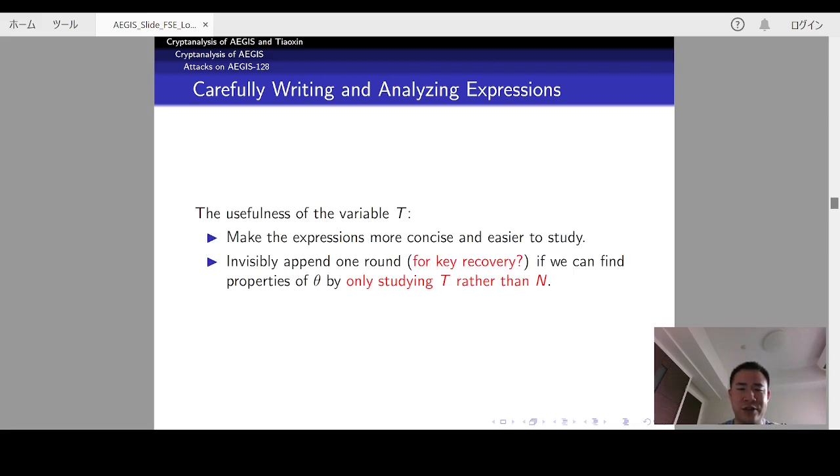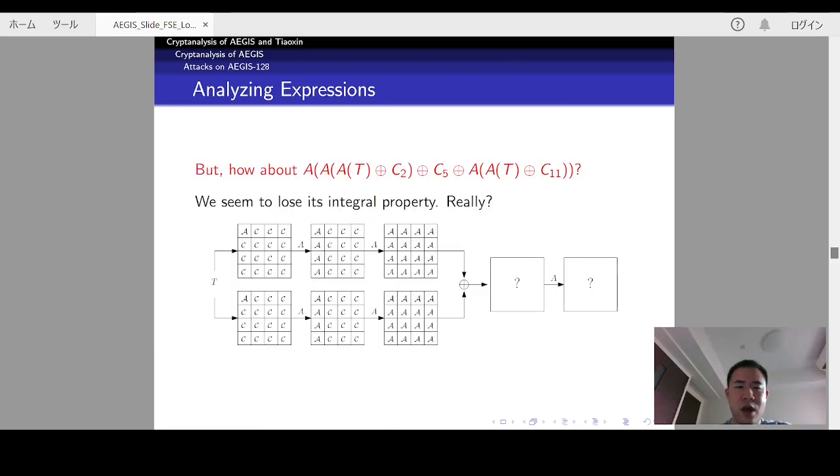The benefits to introduce the variable T is obvious. First, it can make the expressions more concise and easier to study. Second, it can invisibly append one round for key recovery if we can find properties of theta by only studying T rather than N. Appending rounds for key recovery for a distinguisher is common for the cryptanalysis of block ciphers. This is obviously not intuitive for AEGIS because due to the construction of the round function. At the first glance, we seem to lose its integral property. However, is it true?